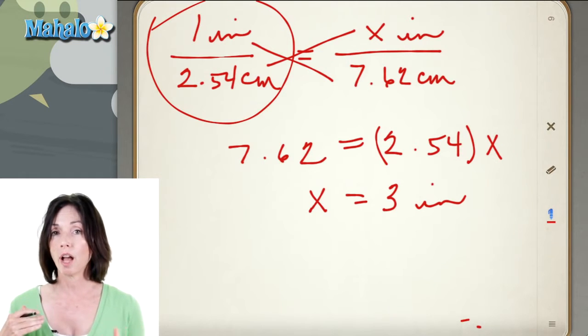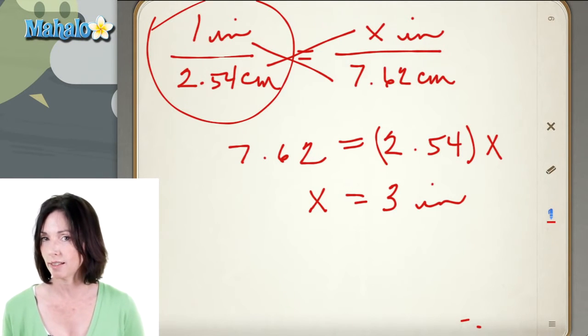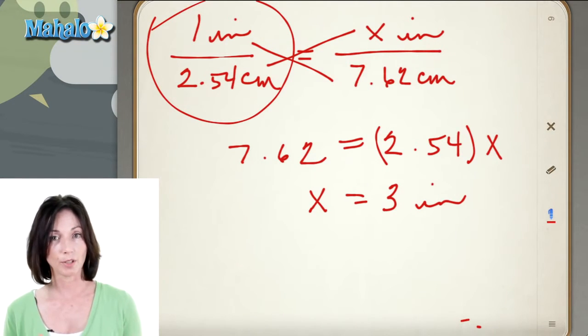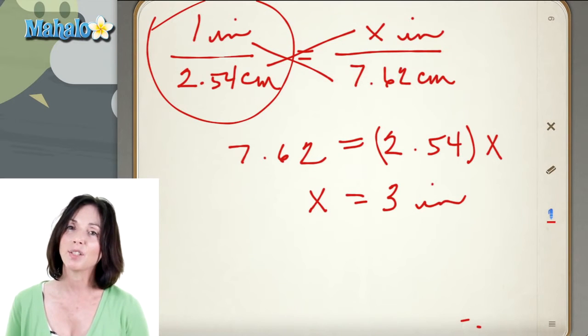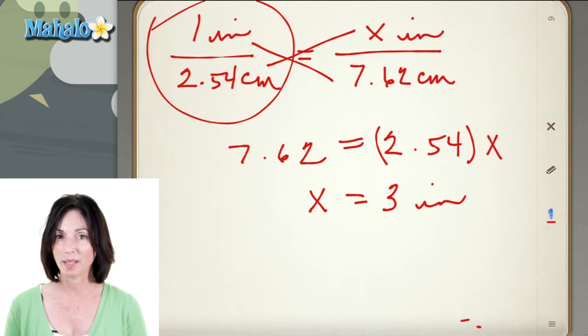If you put inches on the top on one side you have to put inches on the top on the other. And if the centimeters are on the bottom you got to keep the centimeters on the bottom. Then you just cross multiply and solve for the thing that you're missing. And that's how you do conversions from inches to centimeters.